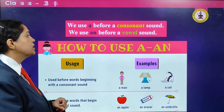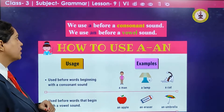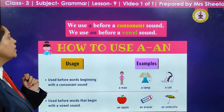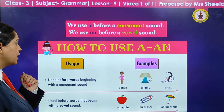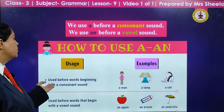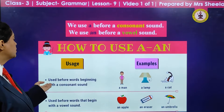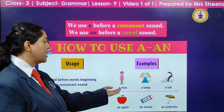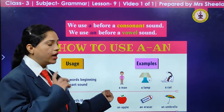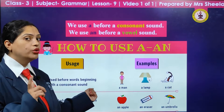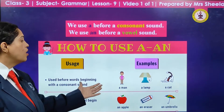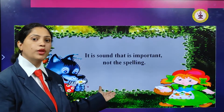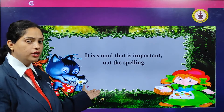How to use a and an? We use a before a consonant sound and we use an before a vowel sound. A is used before words beginning with the consonant sound. For example, a man — as I had told you, A, E, I, O, U are vowels. The word 'man' has the 'ma' sound, so that is not a vowel.